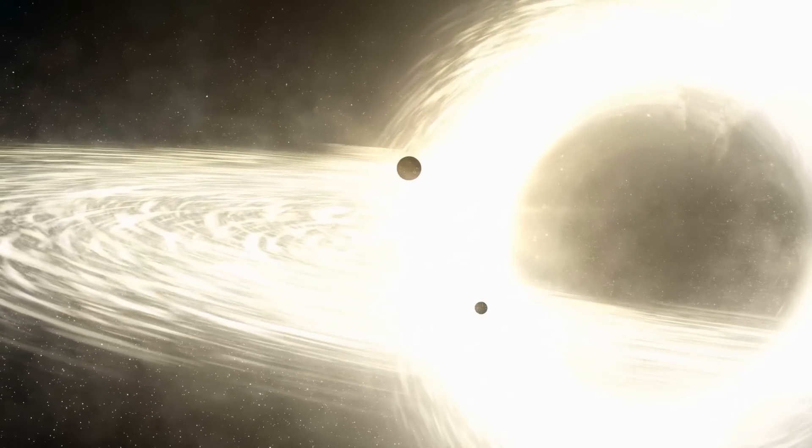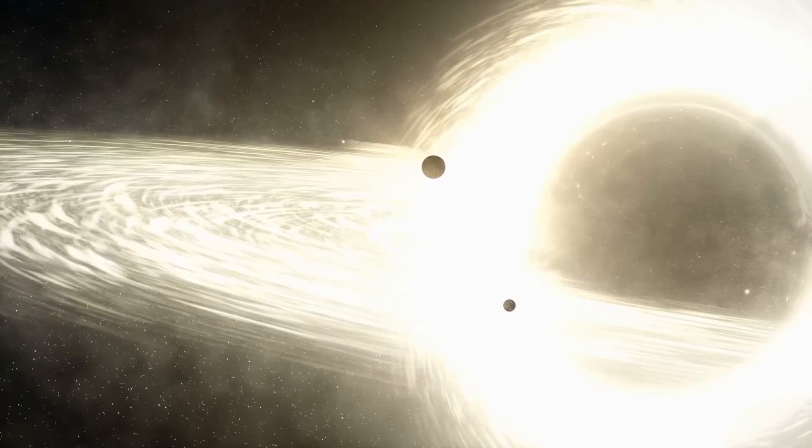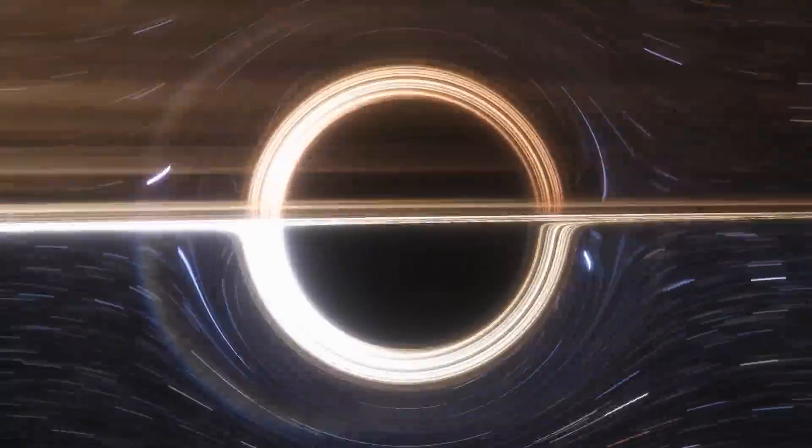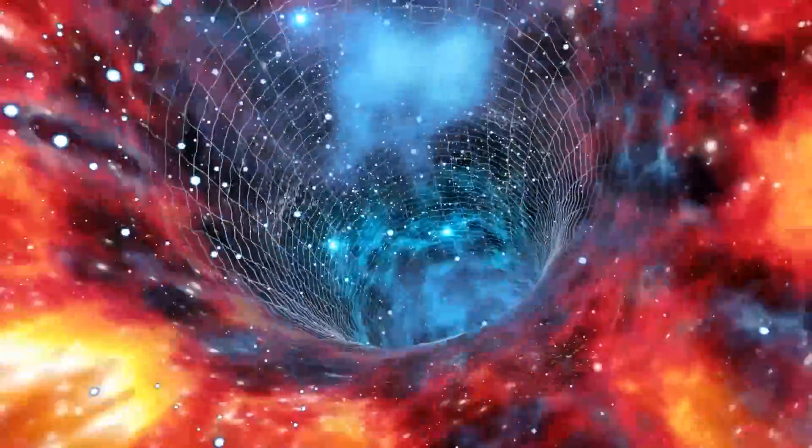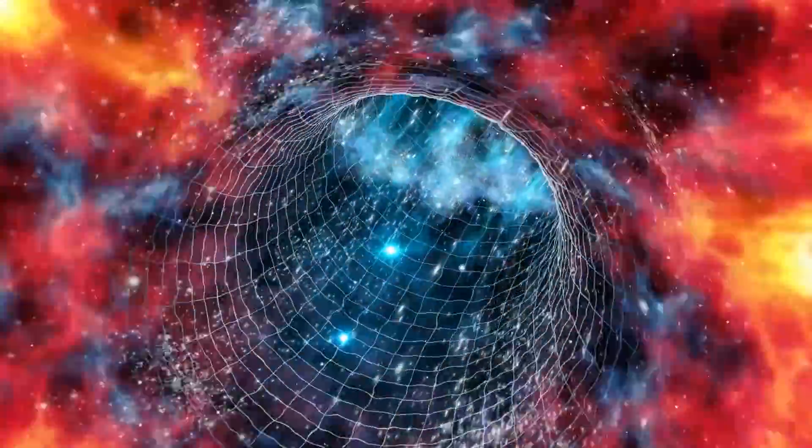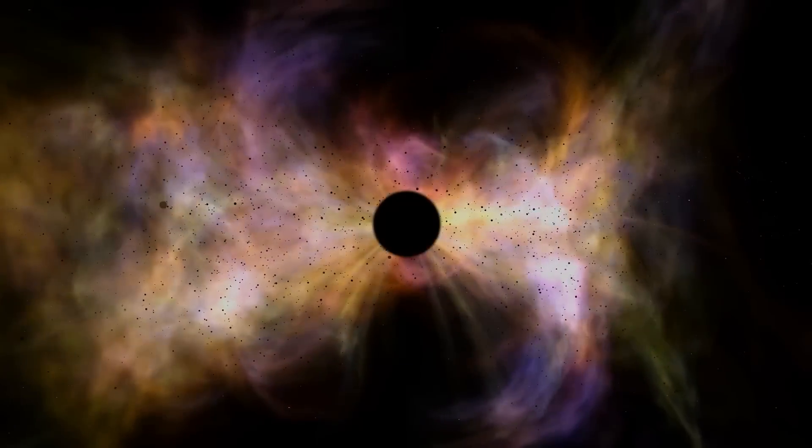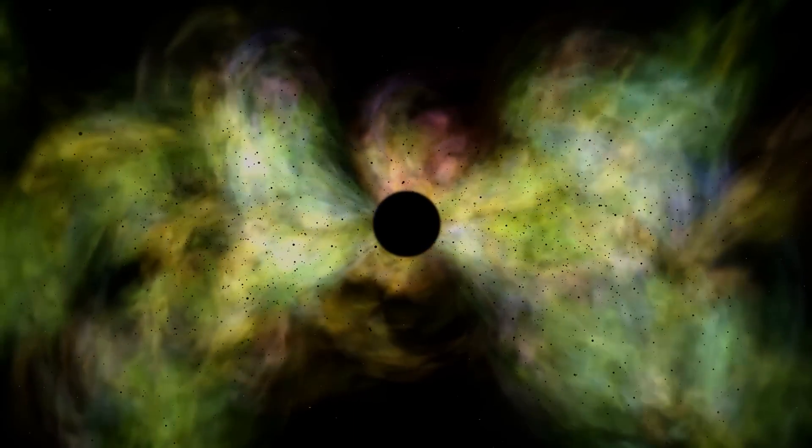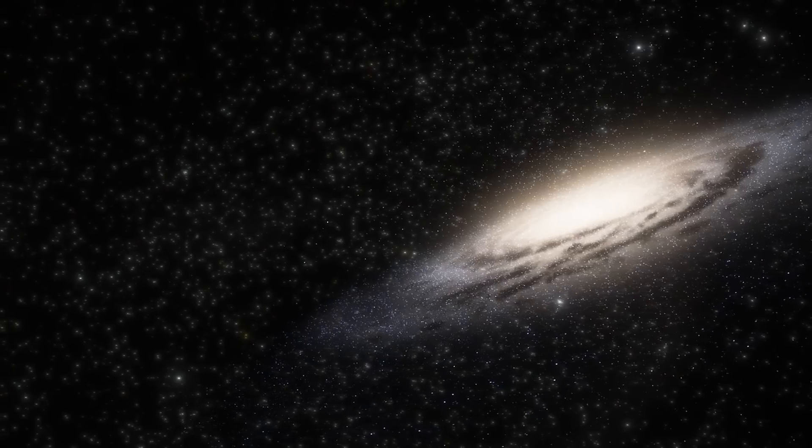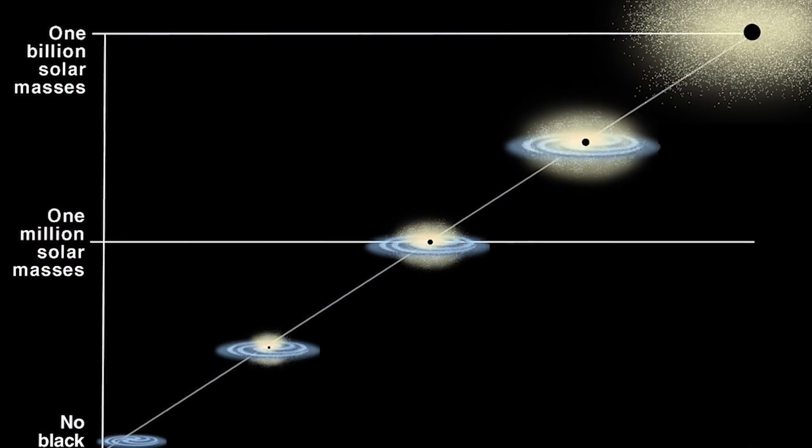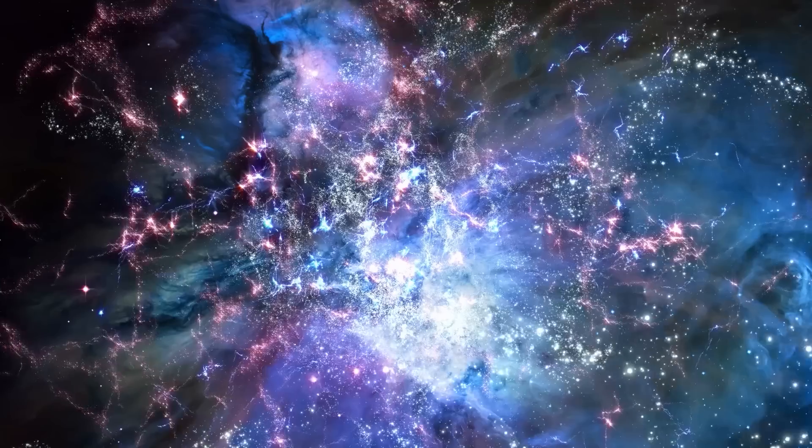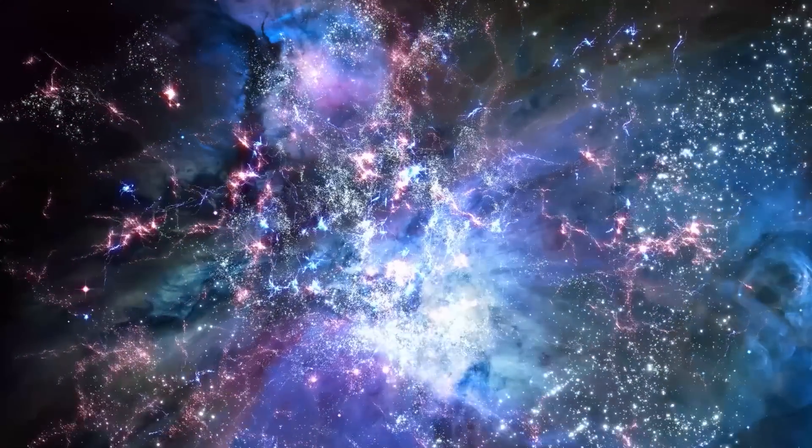However, once an object exceeds the event horizon, it is doomed to be swallowed up by the black hole's central singularity. Because the fabric of space-time inside a black hole is strongly curved, an infalling object will approach the singularity within seconds of crossing the event horizon, increasing the mass of the black hole. The black hole appears to originate, gathers mass, and grow over time from outside the event horizon.